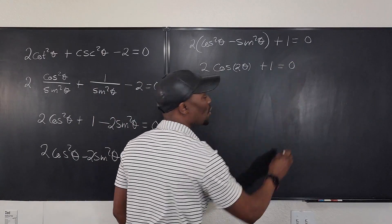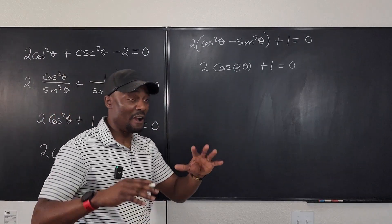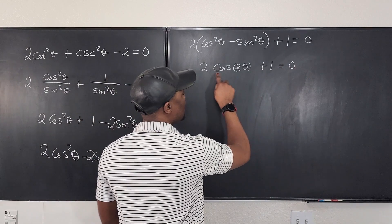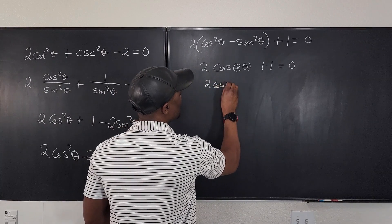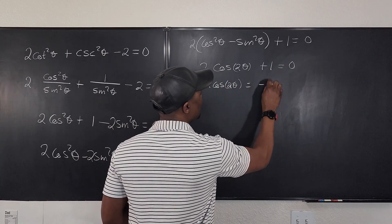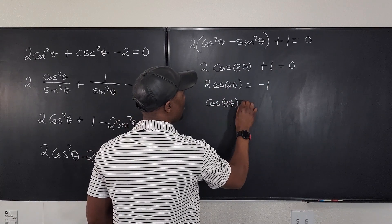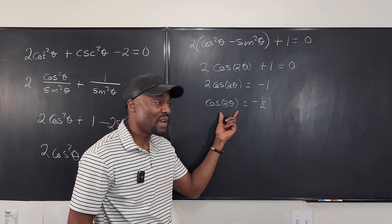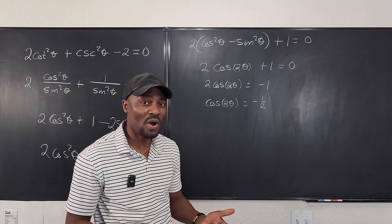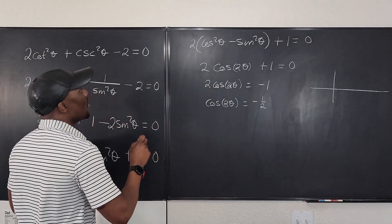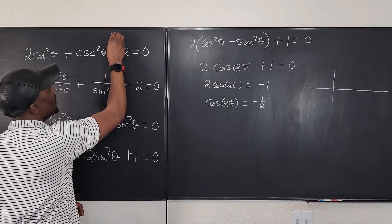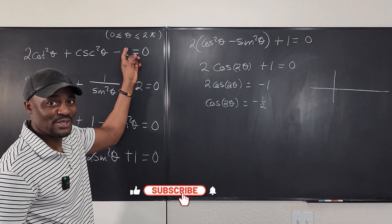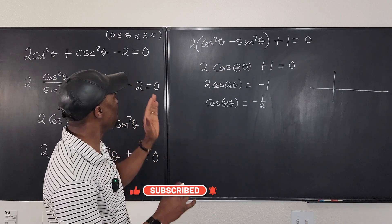Plus 1 equals 0. So we have changed this very cryptic equation into something we can easily solve. Let's get the 1 over and isolate: 2 cosine 2 theta is equal to negative 1, so cosine 2 theta will be equal to negative 1 half. All you have to ask yourself now is what angle is such that when I take the cosine, I get negative 1 half. I always like to sketch. We're restricting our calculation from 0 to 2 pi so we don't get infinitely many answers.